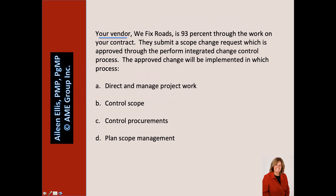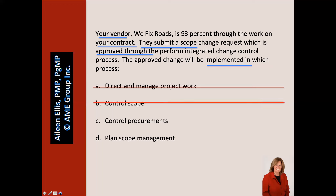When I read the question, we're working with our vendor, and they submit a change request that gets approved. The question asks where does their change request get implemented? Many of us wrongly will jump right to answer A, Direct and Manage Project Work. The question is implying, though it's not clearly stated, that the change request is related to the contract that we have in place with our vendor. Therefore, that change request that's been approved doesn't get implemented through Direct and Manage Project Work, not Control Scope — it gets implemented through the process Control Procurements.